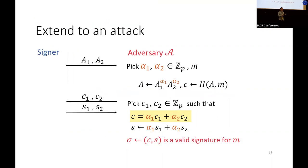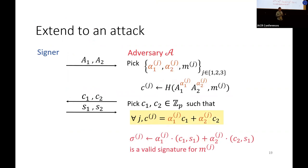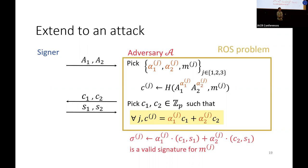Now to extend it to an attack, the idea is that instead of picking just one triple of alpha_1, alpha_2 and the message, we now pick three of them. Then we pick c_1 and c_2 such that the highlighted equations hold for all of them. Then the adversary can output a signature for each triple. So as you can see, the main problem here to make this attack work is how to pick this alpha and how to pick c_1 and c_2. This is exactly the ROS problem for parameter 2.